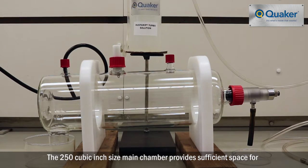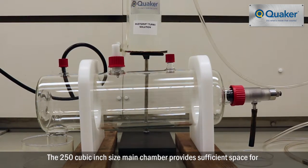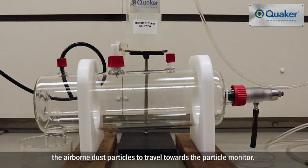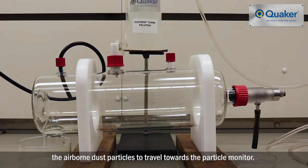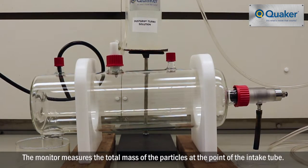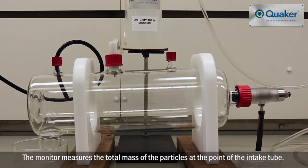The 250 cubic inch size main chamber provides sufficient space for the airborne dust particles to travel towards the particle monitor. The monitor measures the total mass of the particles at the point of the intake tube.